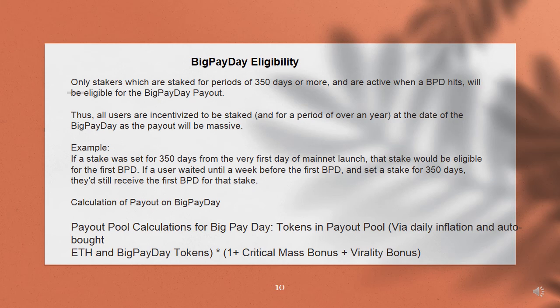Calculation of payout on Big Payday. Payout pool calculations for Big Payday: tokens in payout pool via daily inflation and auto-bought ETH, and Big Payday tokens × (1 + critical mass bonus + virality bonus).